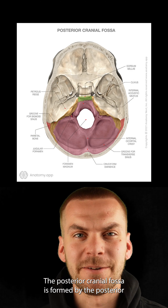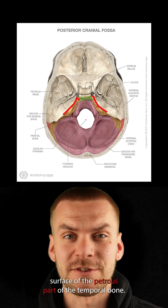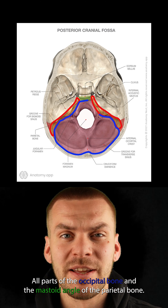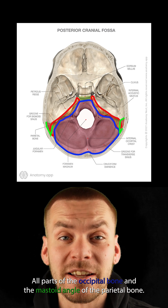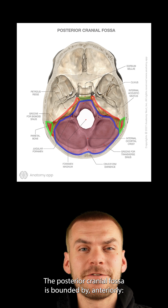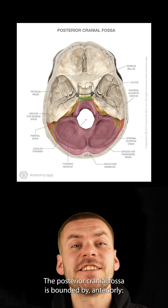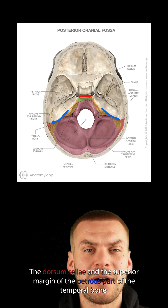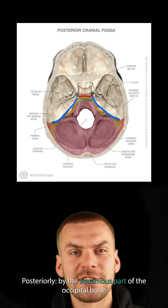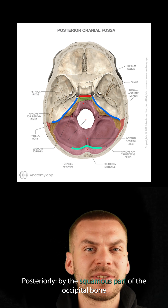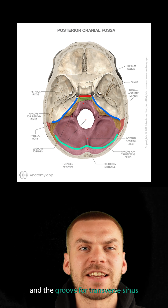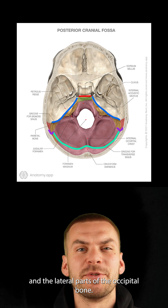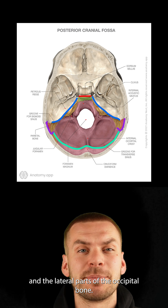The posterior cranial fossa is formed by the posterior surface of the petrous part of the temporal bone, all parts of the occipital bone, and the mastoid angle of the parietal bone. It is bounded anteriorly by the dorsum sellae and the superior margin of the petrous part of the temporal bone, posteriorly by the squamous part of the occipital bone and the groove for the transverse sinus, and laterally by the petrous and mastoid parts of the temporal bone and the lateral parts of the occipital bone.